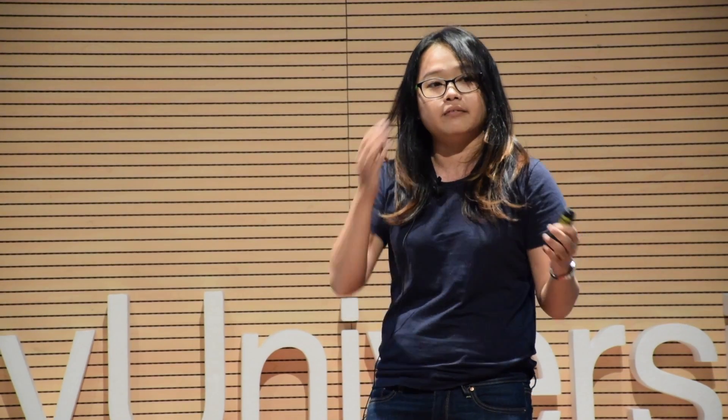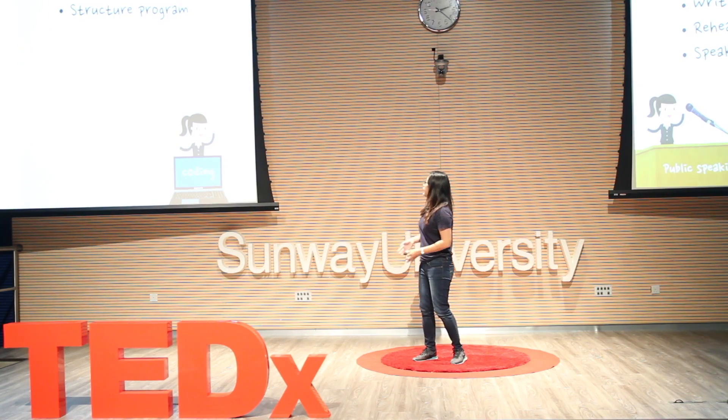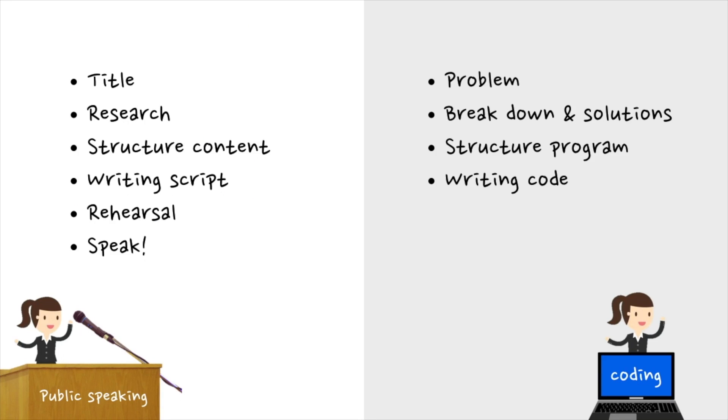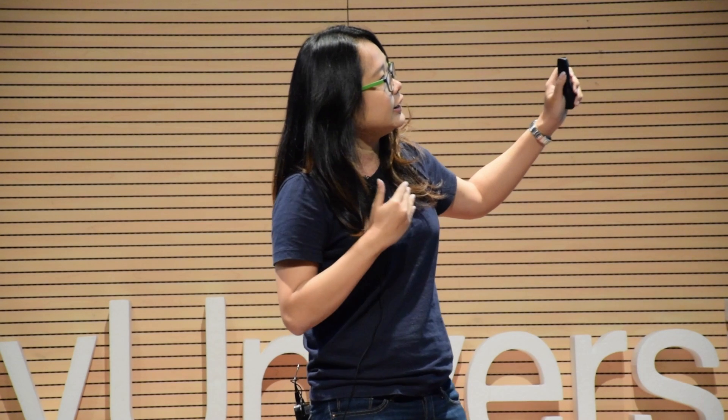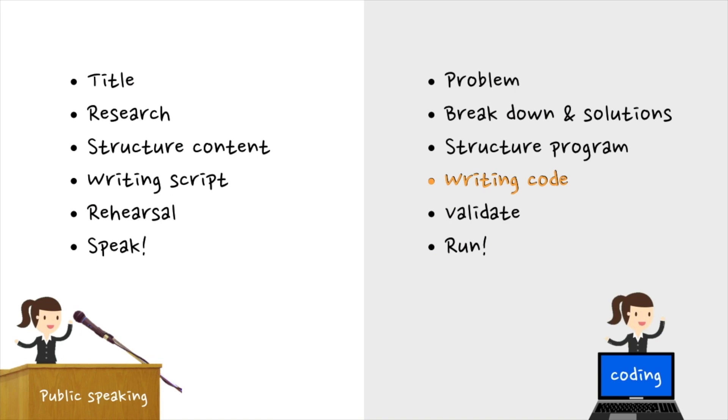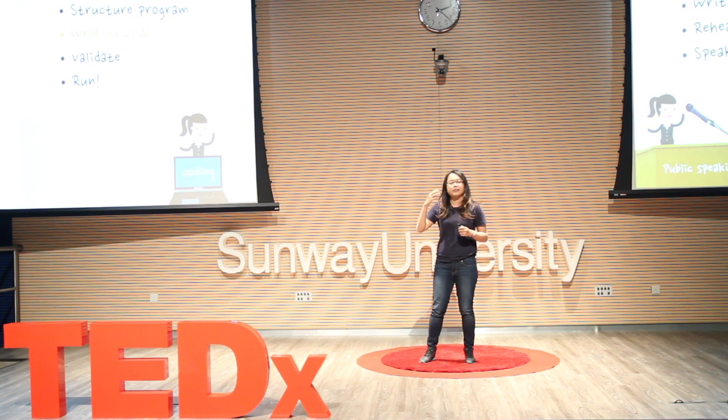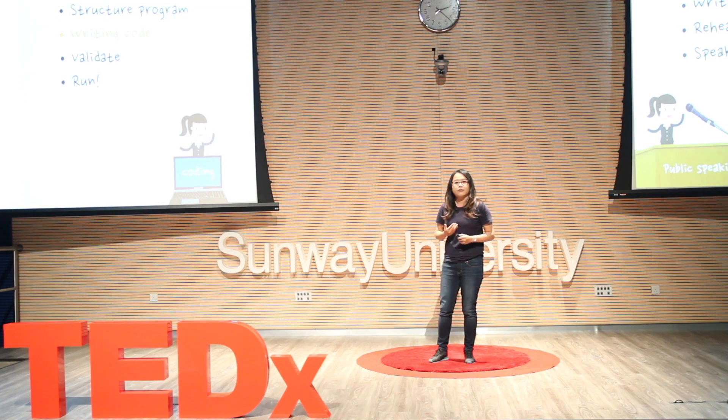Before we start coding, we need to know what problem we're trying to solve — like your Uber or GrabCar app, which solves the problem of hailing a taxi. Then we break down and find the right solution for the problem, structure our program, write the code, validate it, test all the use cases, and then run the program. My point is: writing code is just part of the coding process. You need a lot of thinking, planning, and analytical thinking when you code.